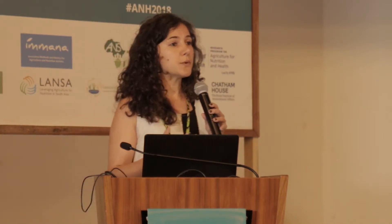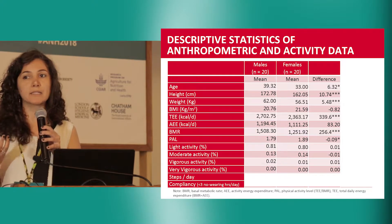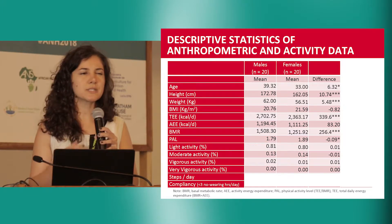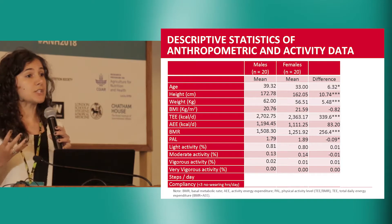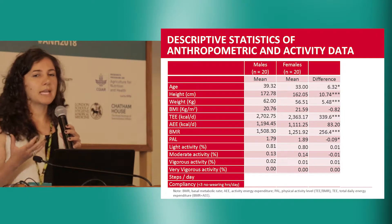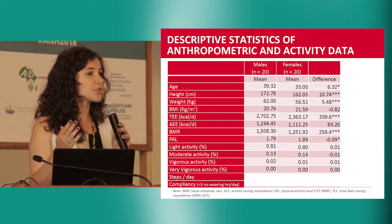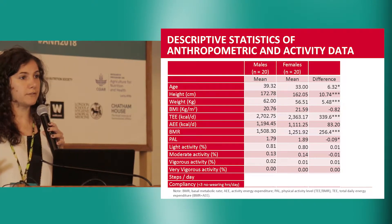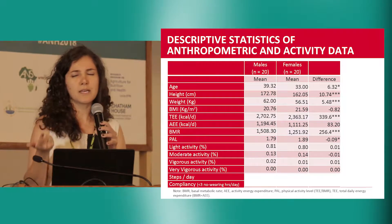For example, accelerometer devices allow us to calculate the physical activity level (PAL) index, which is a standardized index of energy intensity. It is standardized because it adjusts calorie expenditure to different individual characteristics — in particular biological sex, age, height, and weight.